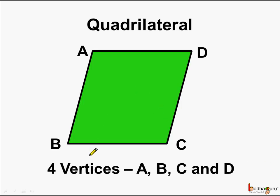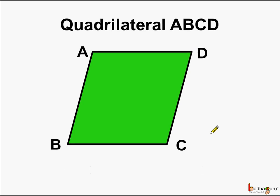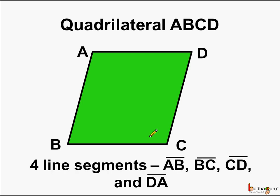As we saw, this is a quadrilateral which is made of four sides. So it has four vertices: vertex A, vertex B, vertex C and vertex D. Also, this quadrilateral is made of four line segments — line segment AB, line segment BC, line segment CD and line segment DA. Hence, it is called the quadrilateral ABCD. ABCD are the four vertices of this quadrilateral.